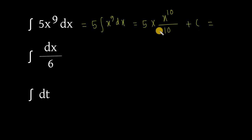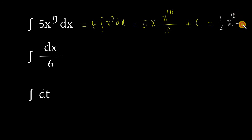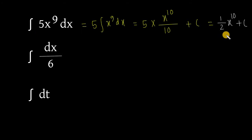Plus c. And 5 to 10-ke kaatle kane paavo half. Aamra paavo half x to the bar 10. Paatsi correct. Taahle aamra pelam integral of 5x to the bar 9 dx equal to half x to the bar 10 plus c.